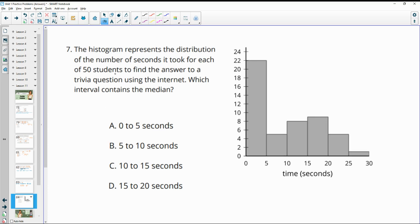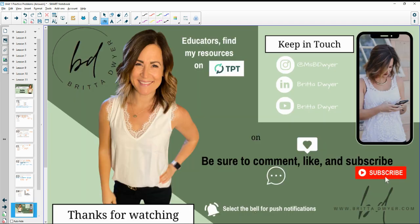Number seven, the histogram represents the distribution of the number of seconds it took for 50 students to find the answer to a trivia question using the internet. Which interval contains the median? So we can see they're listed like lowest interval to highest. So if we have 50 students, that means that the data is going to be split 25 and 25. So our 25th value and our 26th value, that's going to be how we're going to find the median. So if we look here, we've got 22 values in this first tower and then we've got 5 in this second. So that means that our median is going to end up in this second bar or this second interval from 5 to 10.